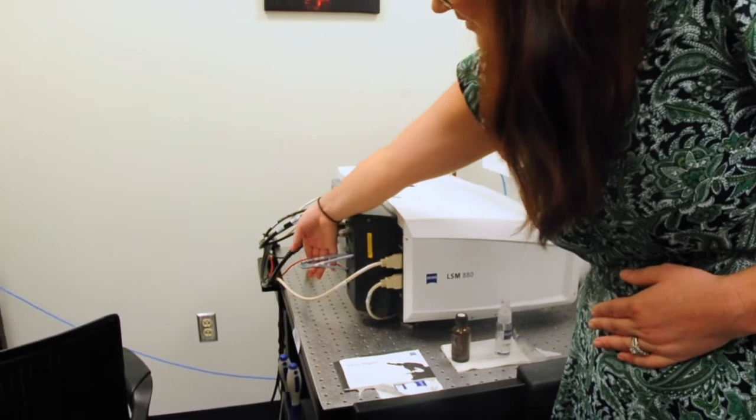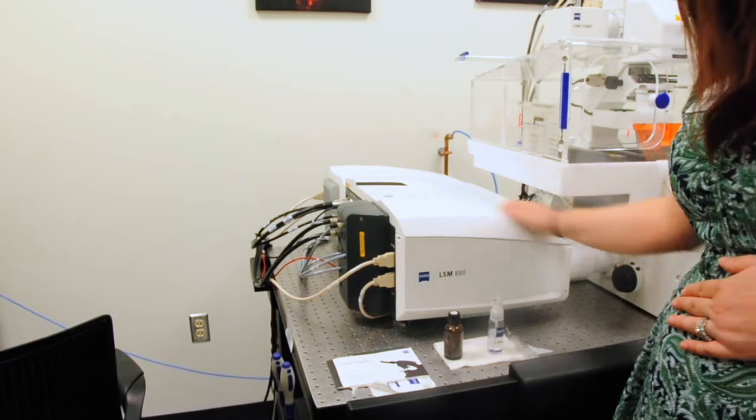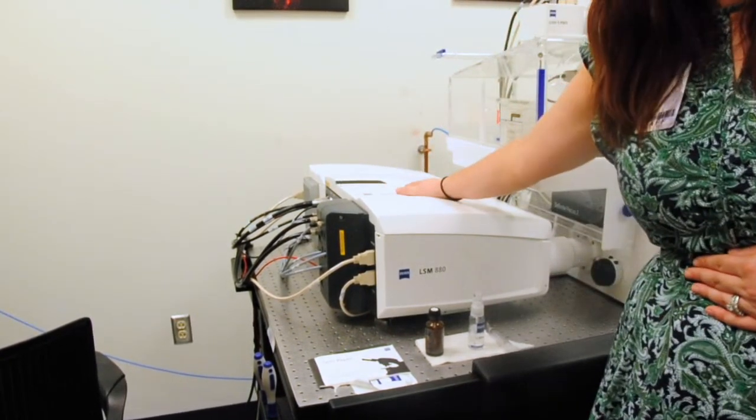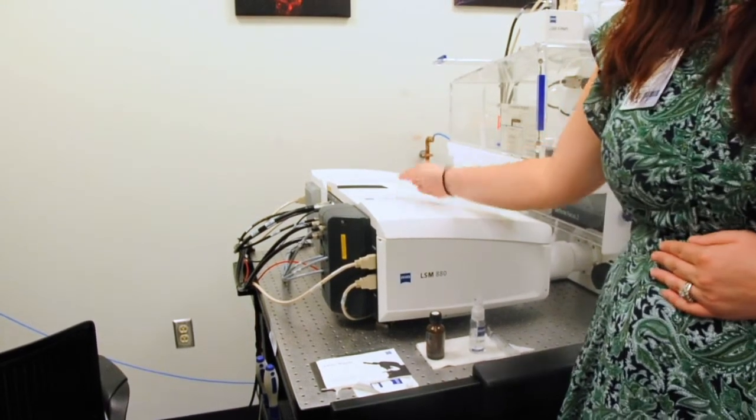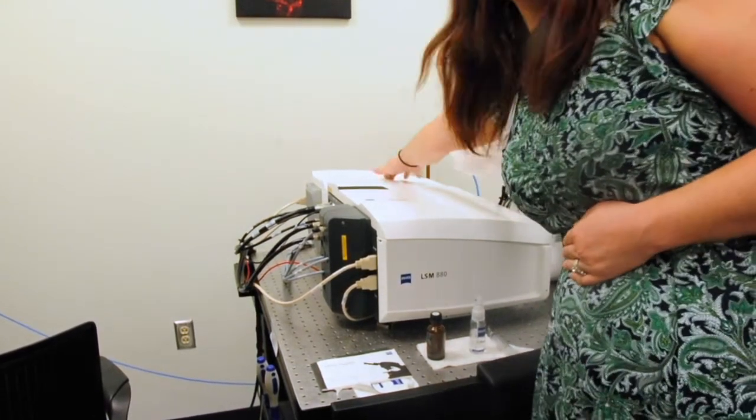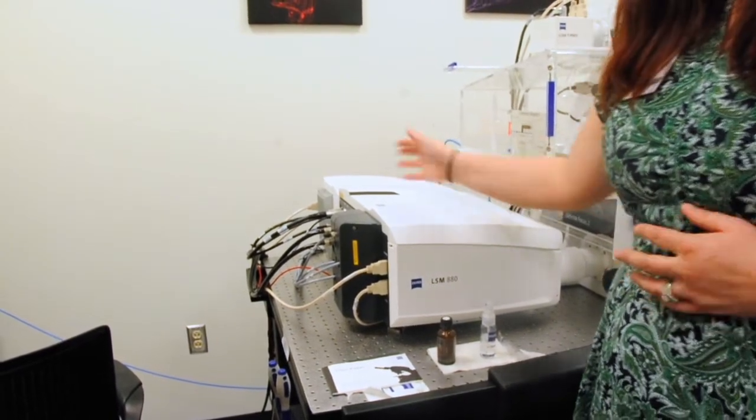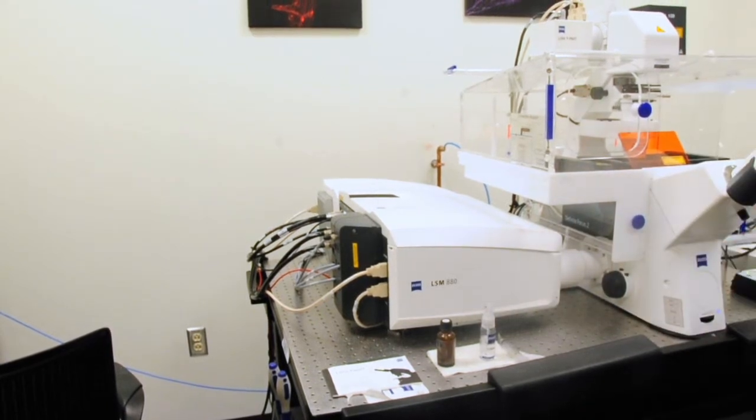Our lasers actually are coming in right through here with our optics coming into the scan pad, going to our sample, coming back and being dispersed with variable dichroic mirrors to the different PMTs. Or we can have it bypass that and go all the way back to the Airscan, which is a 32 hexagonal array that allows us to have a better resolution than we would normally have with a confocal microscope.